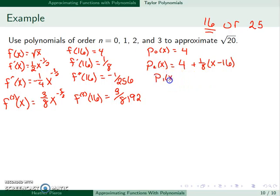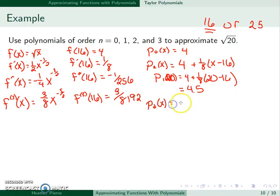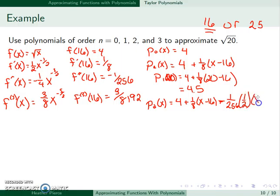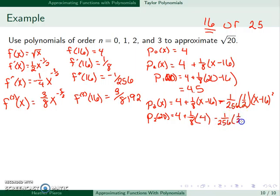Evaluating p1 at x equal to 20: 4 plus 1 over 8 times 20 minus 16 gives 4.5. The second polynomial is 4 plus 1 over 8 times x minus 16, plus the second derivative term: minus 1 over 256 times 1 over 2 factorial times x minus 16 squared. Evaluating at 20: 4 plus 1 over 8 times 4, minus 1 over 256 times 1 half times 4 squared, which is approximately 4.469.